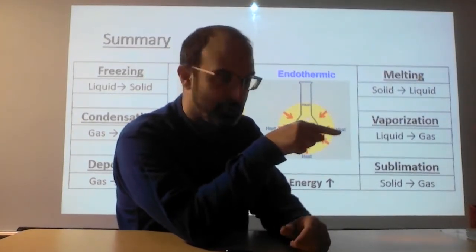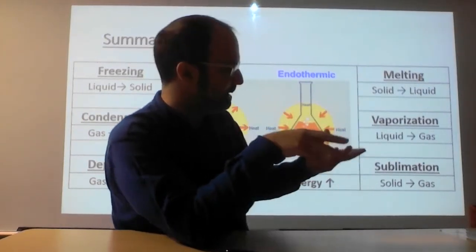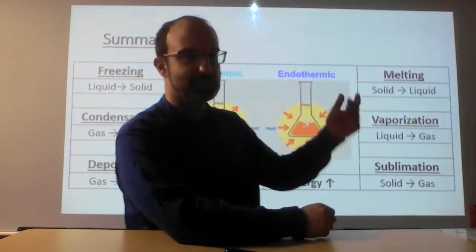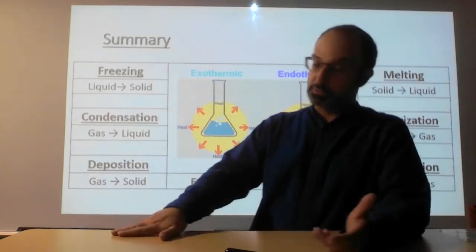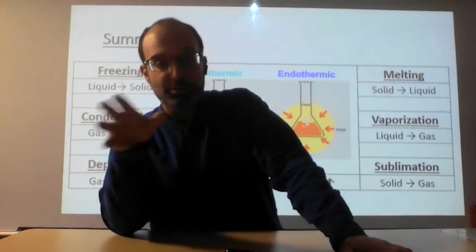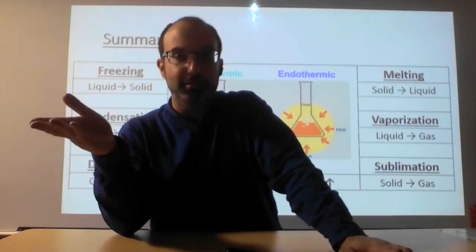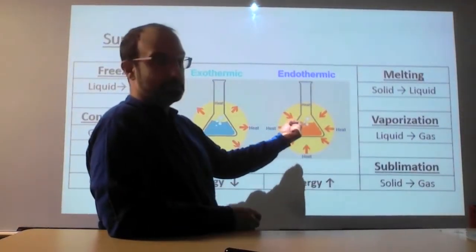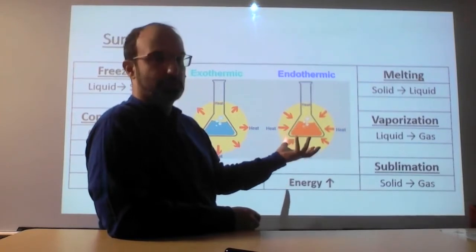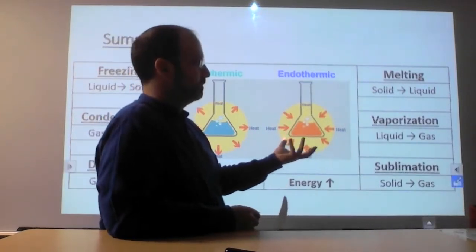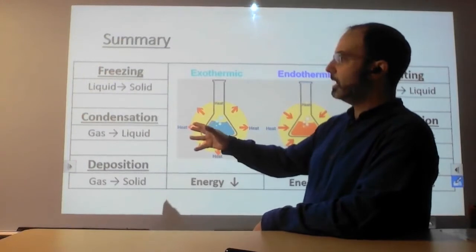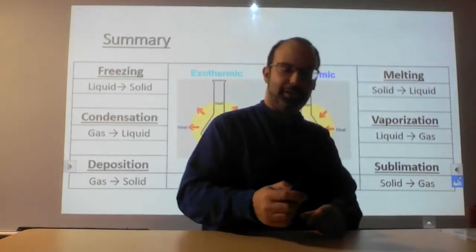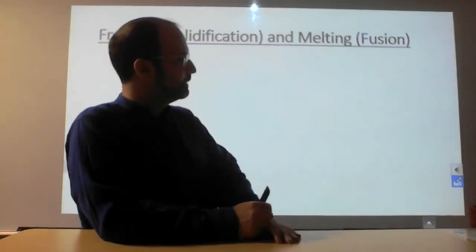Each one of these transitions has their own name or word to describe what they do, but at the end of the day it's the same thing: energy is going up on this side, energy is going down on this side. And as we've discussed, the energy has to go somewhere. If the energy is coming in here, that means the surroundings must be getting colder. Conversely, if the energy is coming out, the surroundings must be getting hotter.